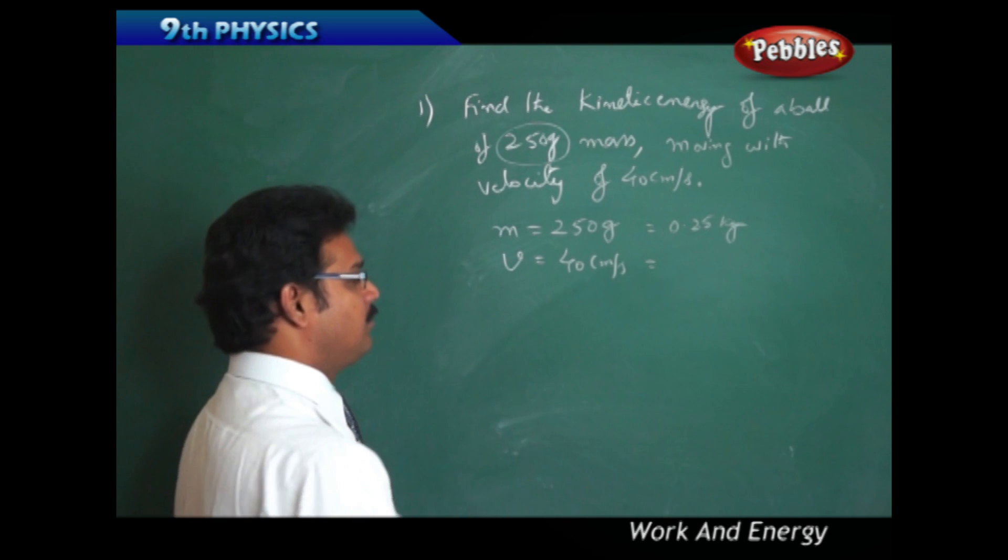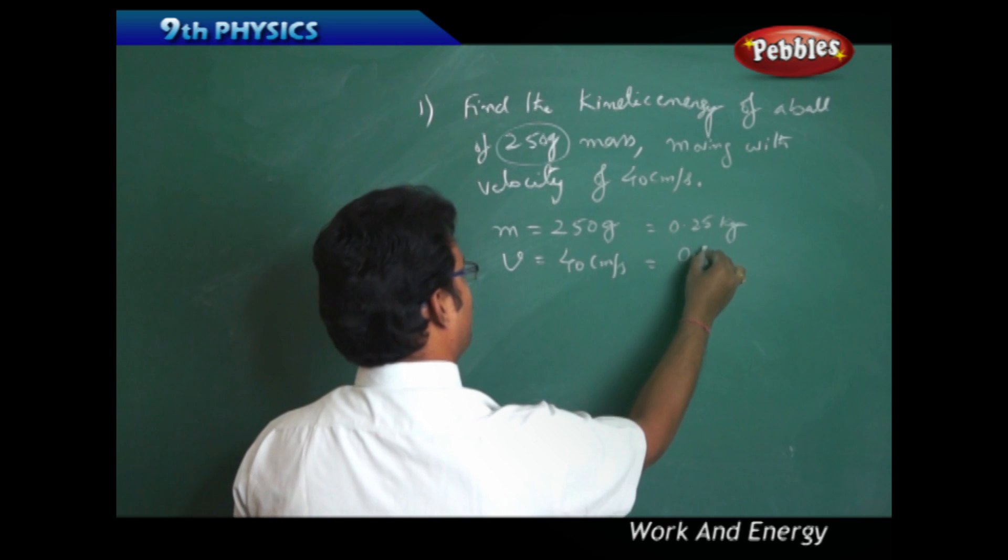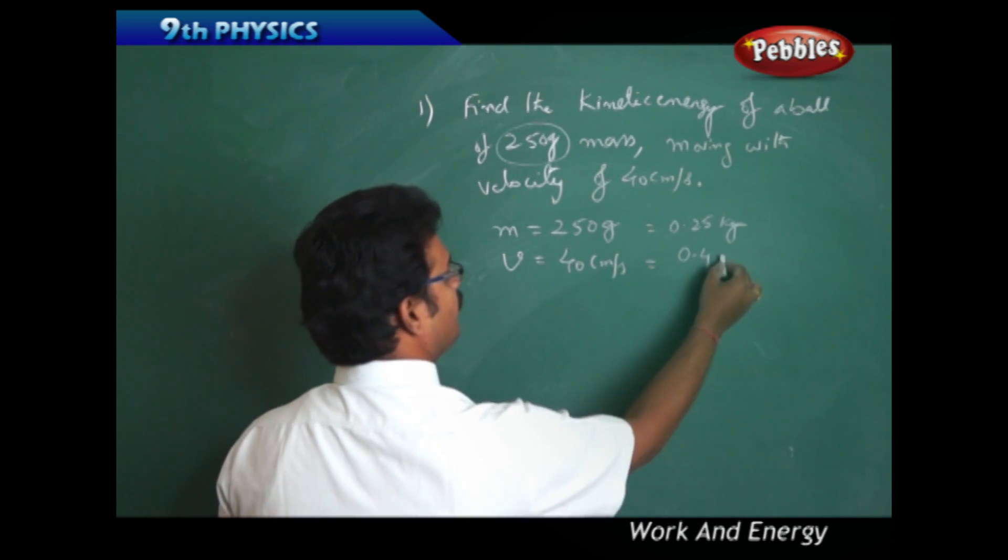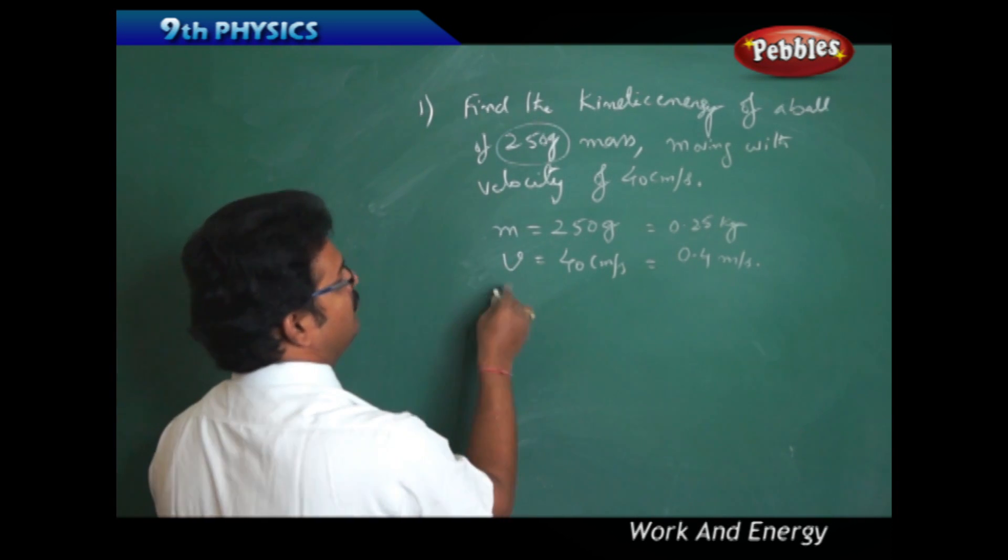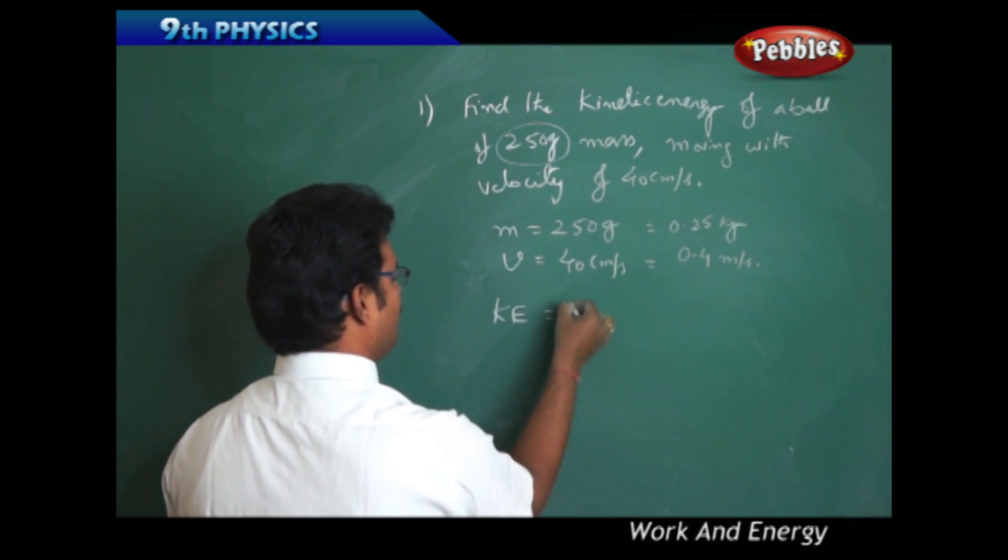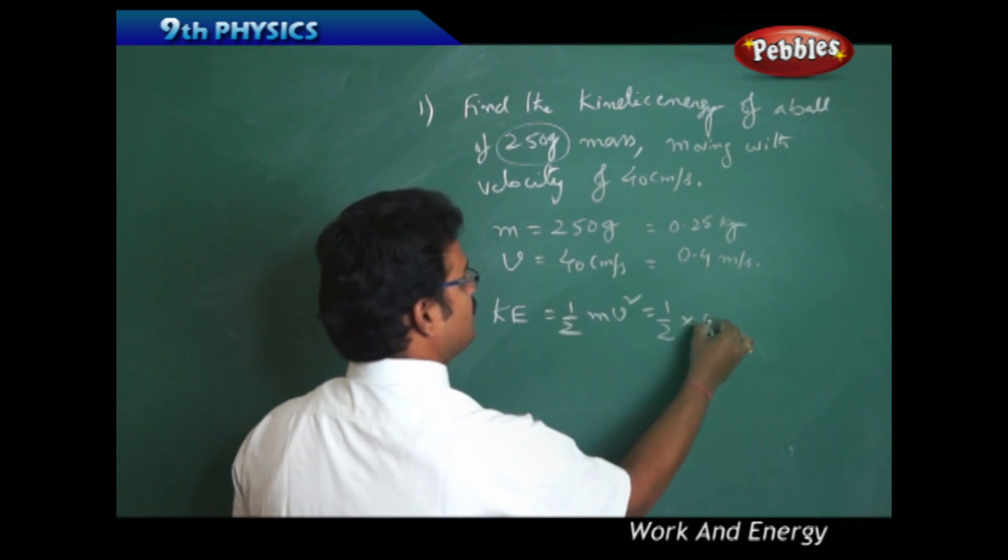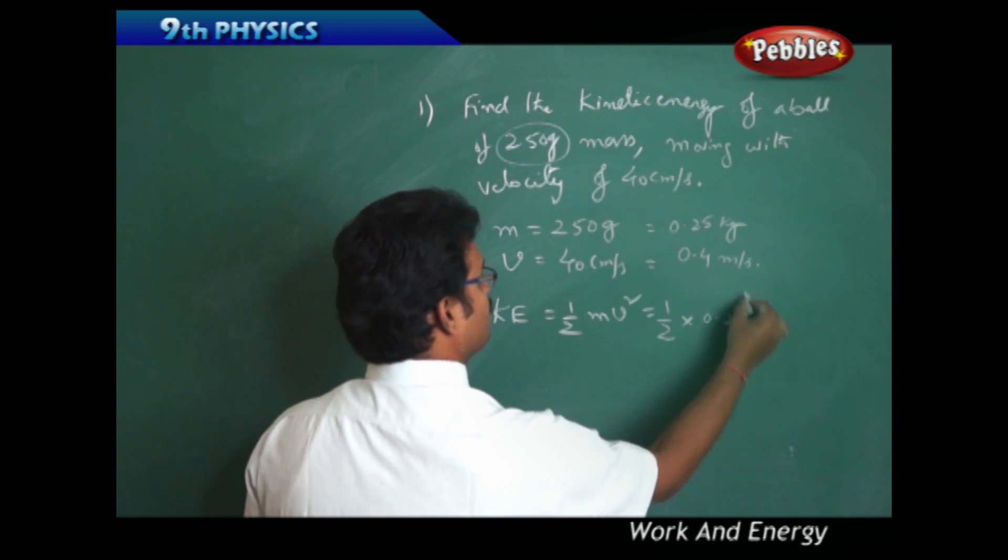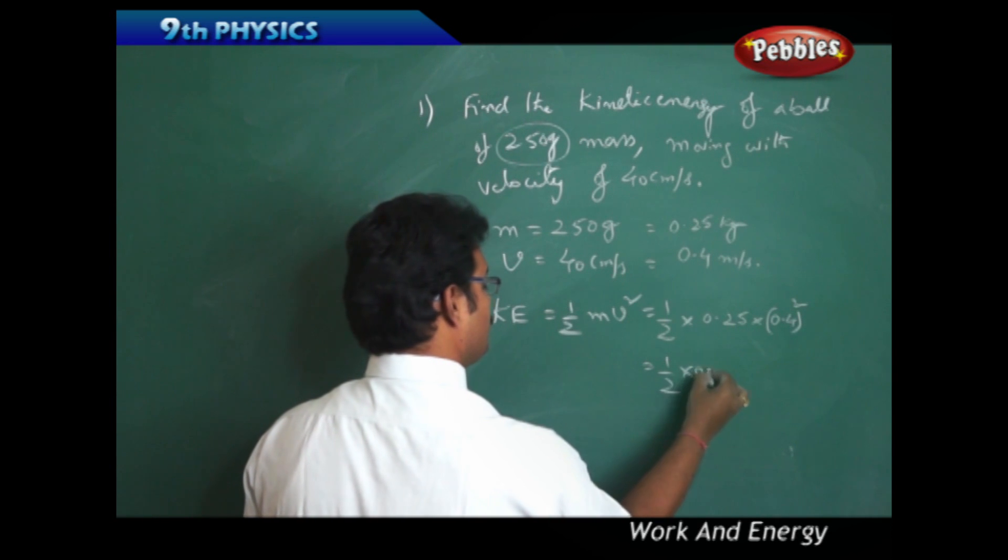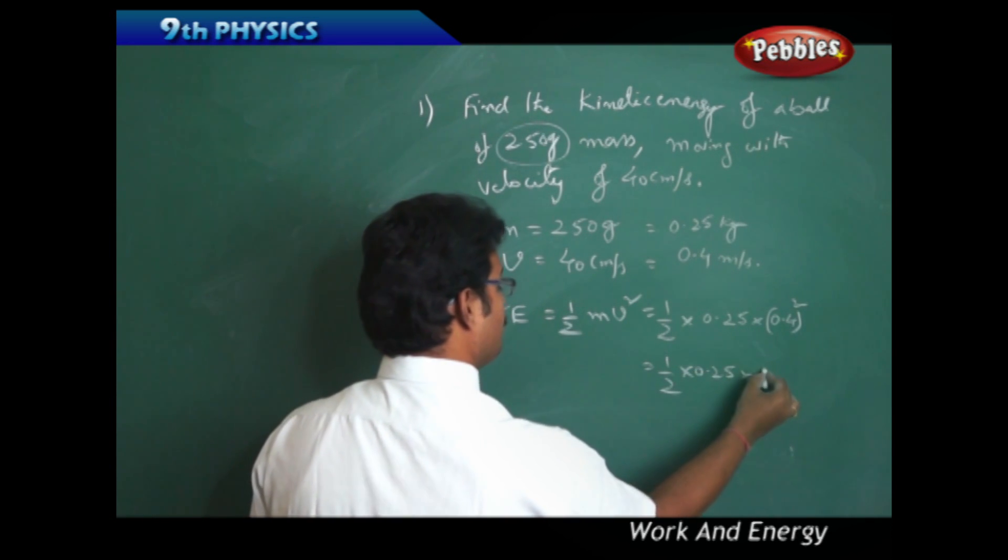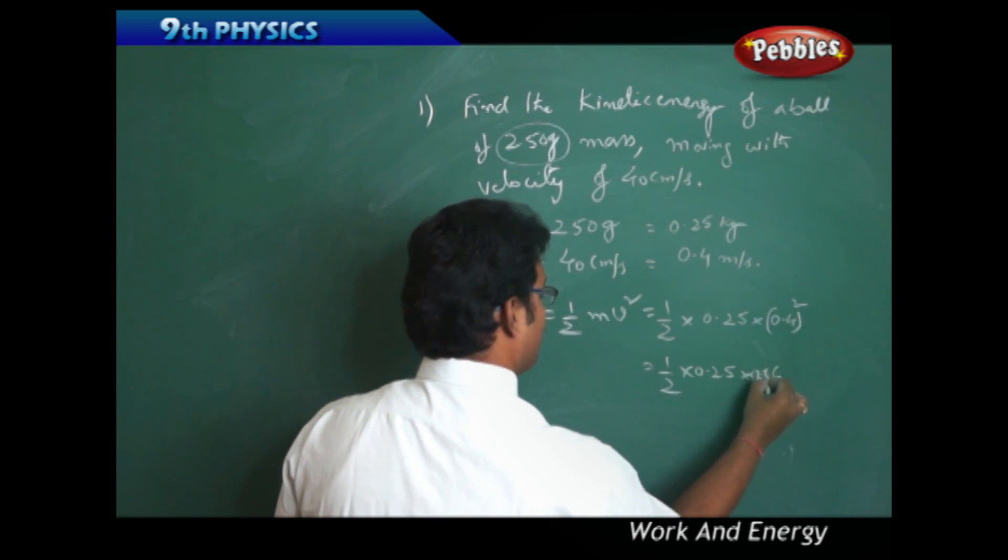So you got mass, you got velocity. You have to find kinetic energy. Just now we have derived the formula: kinetic energy = (1/2)MV². So half into mass is 0.25, V² is 0.4 whole squared. So half into 0.25 into 0.16.